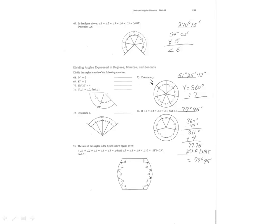For number 73, determine why. We have 360 degrees in a circle and seven sections, so if you take 360 divided by seven, it will equal 51 degrees, 25 minutes, and 43 seconds. For number 74, we also have 360 degrees minus 49 degrees, which equals 311 degrees. We have four sections, so 311 divided by four equals 77.75. They want it in degrees, minutes, and seconds, so take 77.75 second function DMS — it will be 77 degrees, 45 minutes.